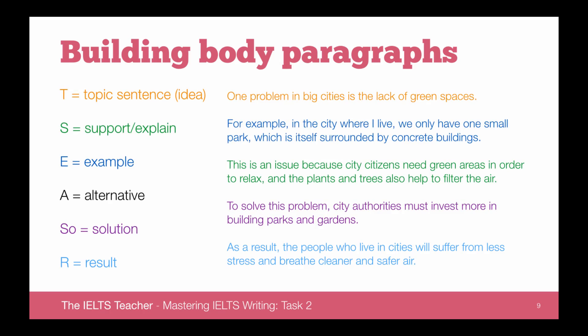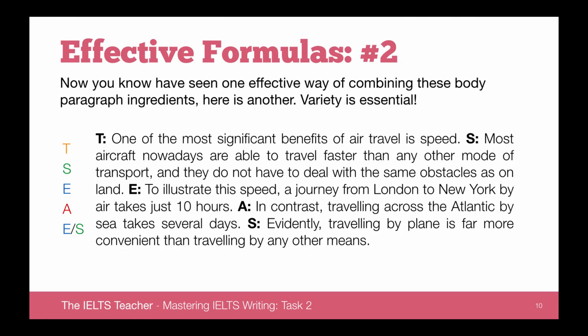We can do these in any order. Here's another formula where we've gone: topic sentence, supporting sentence, example, alternative, and then another example or supporting sentence. In an advantages and disadvantages essay, the topic sentence might be: 'One of the most significant benefits of air travel is speed.' Very clear. The supporting sentence gives a little more information: 'Most aircraft nowadays are able to travel faster than any other mode of transport and they do not have to deal with the same obstacles as on land.'